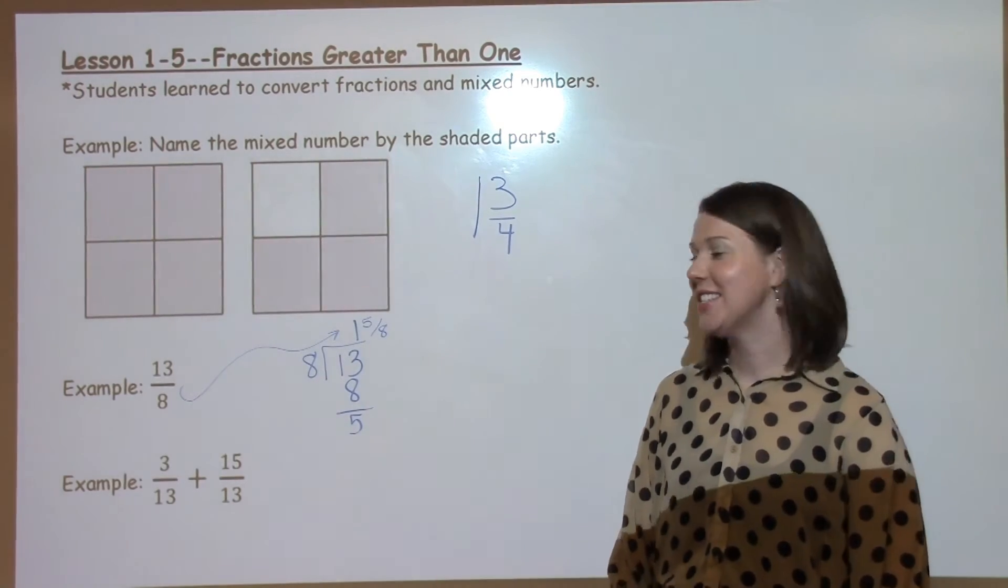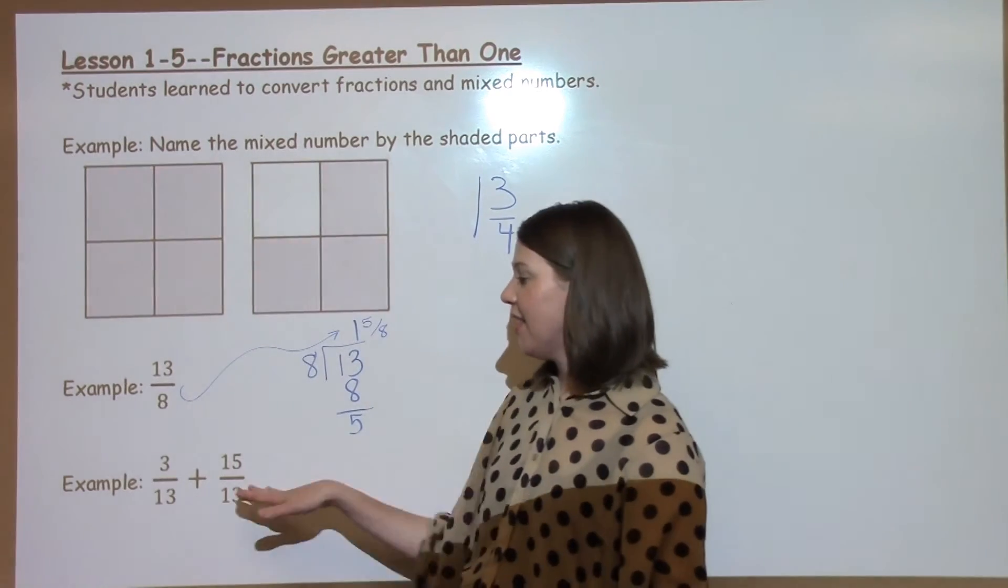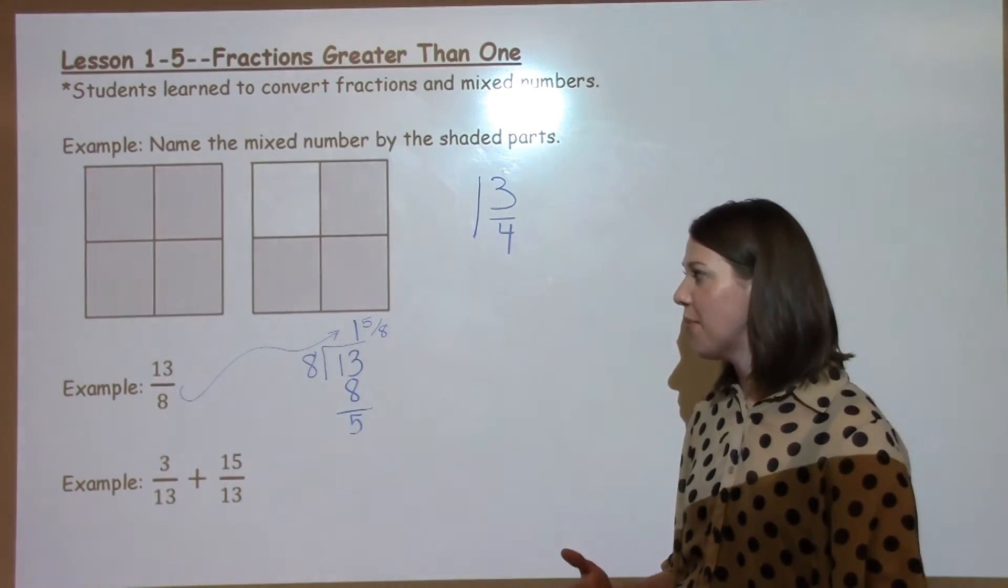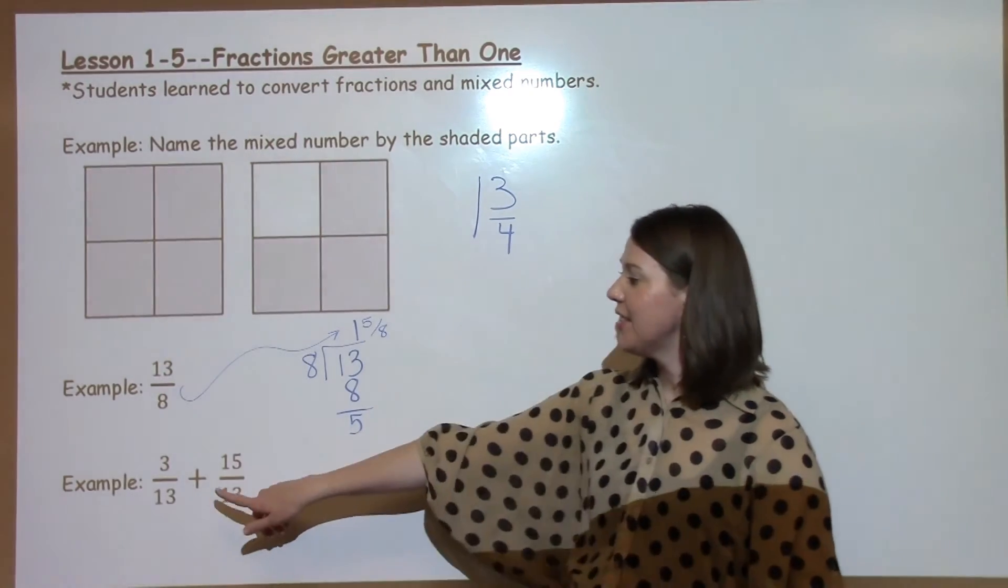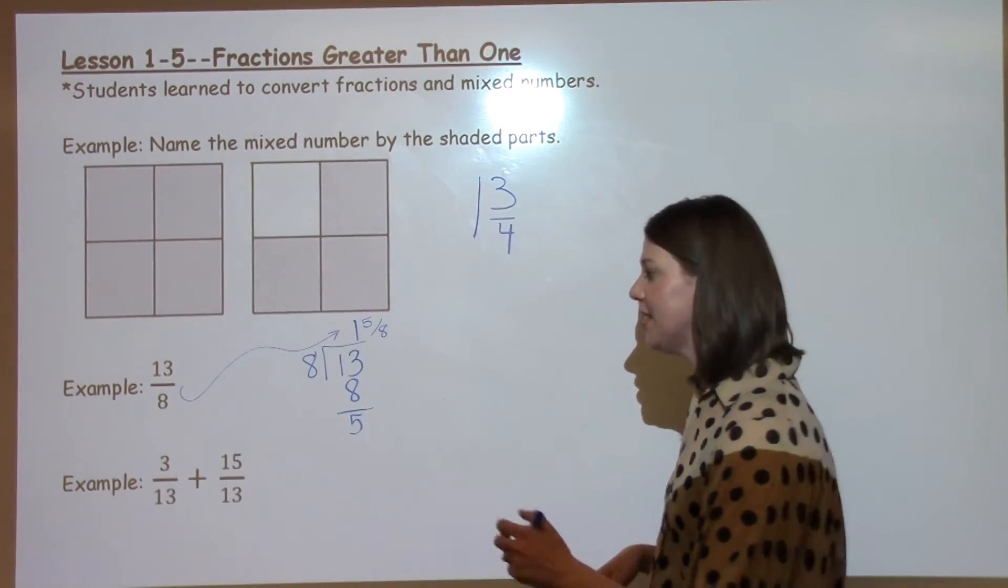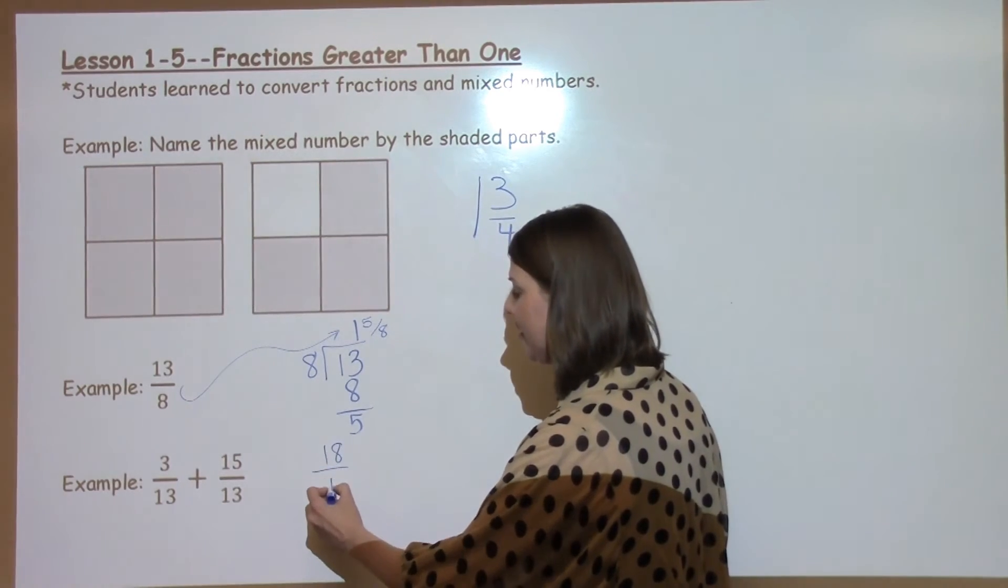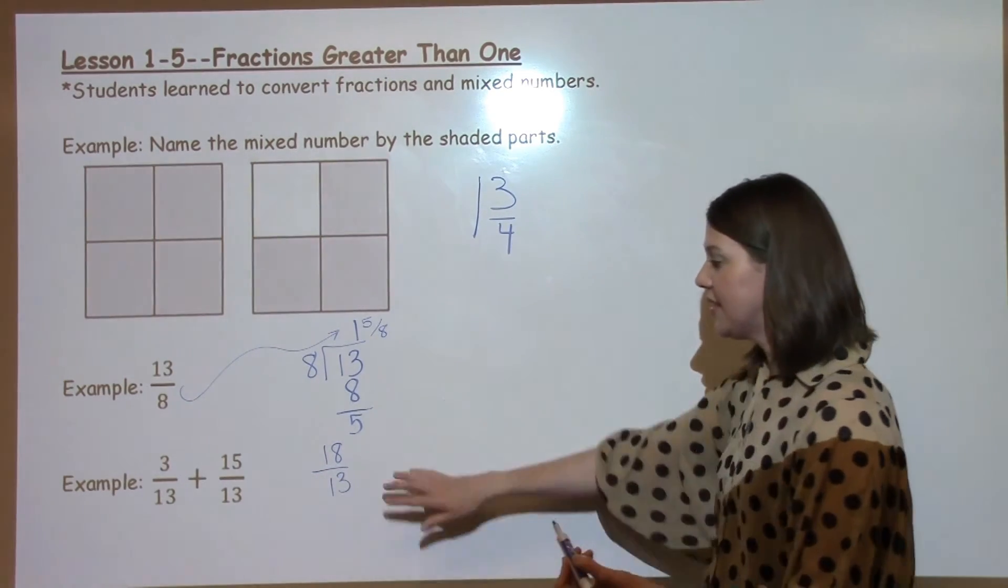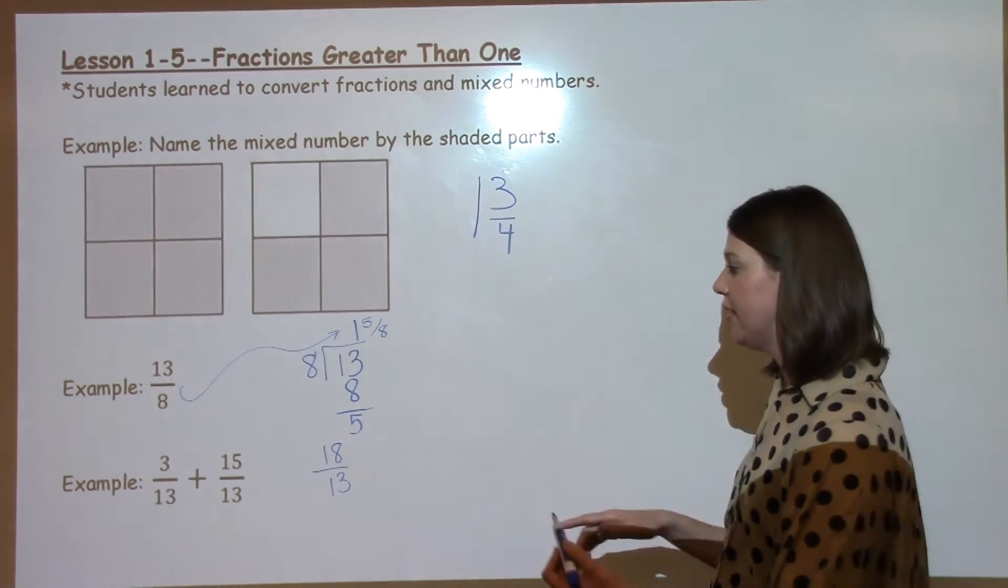Another type of question the students saw today was when they had to add and then change to an improper fraction. So we have 3 thirteenths plus 15 thirteenths, which gives us 18 thirteenths. We need to make this improper fraction to a proper fraction by dividing.